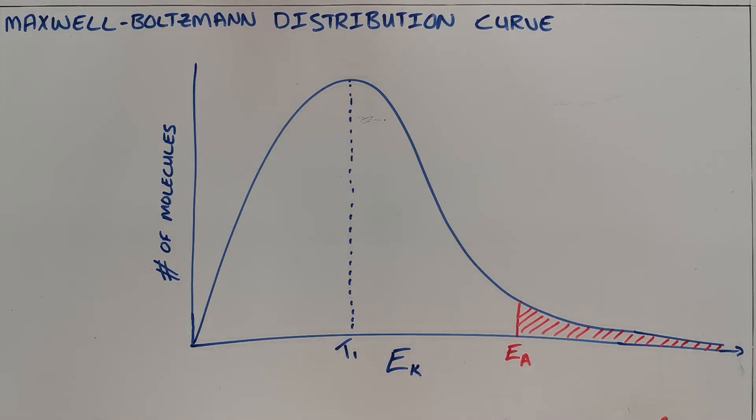Now there are two ways in which we can increase the number of particles that have that required activation energy. The first way is to increase the average temperature.